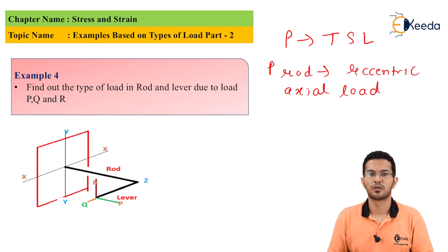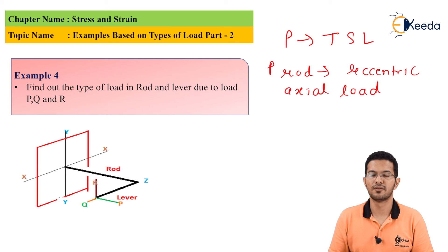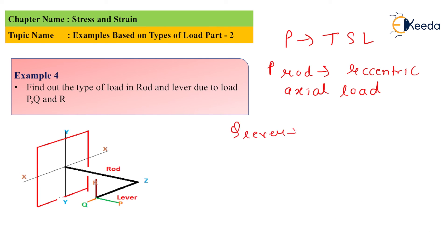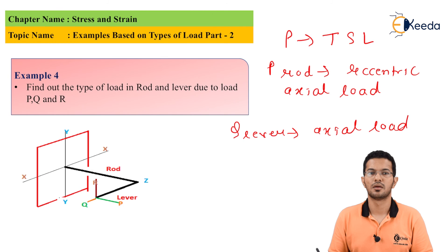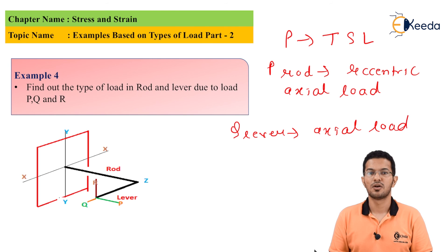Load Q is normal to the surface of the lever and passes through the axis. Hence, load Q is axial load for the lever. For the rod, load Q is parallel to the surface and passes through the axis. Hence, load Q is transverse shear load for the rod.